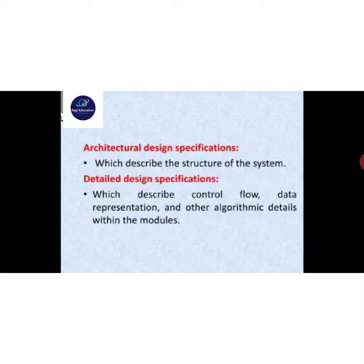Detailed design specification describes control flow, data representation, and other algorithmic details within the modules. Detailed design means full design specification — describing each module's functions including control flow, data representation, and other algorithmic details. The full entire functionality design is the detailed design.